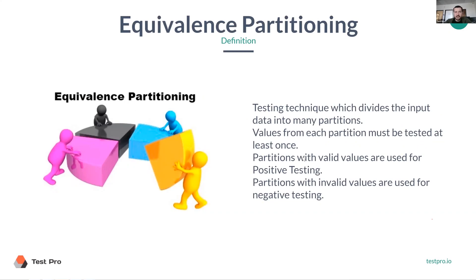Equivalence partitioning is about splitting or dividing input data into many partitions, and we need to check each partition at least once.